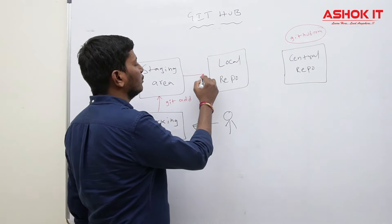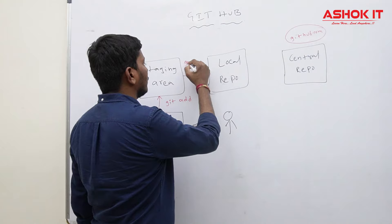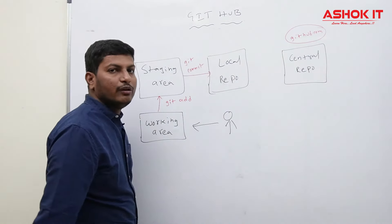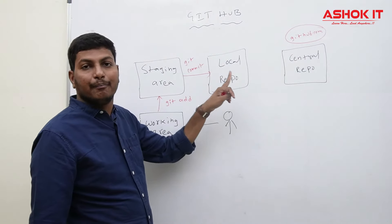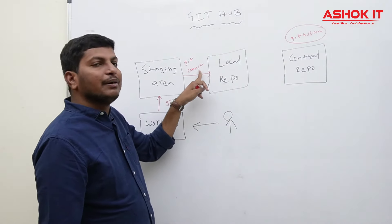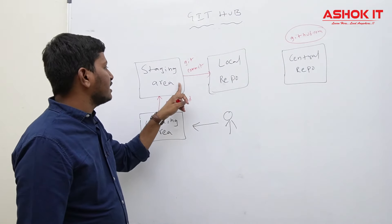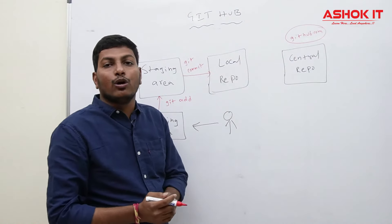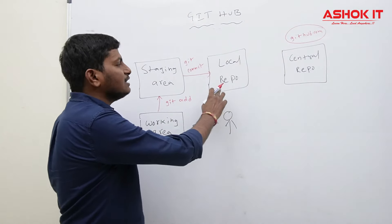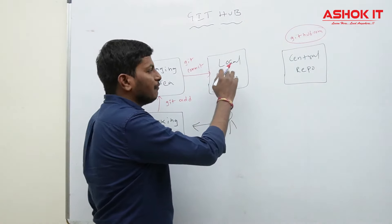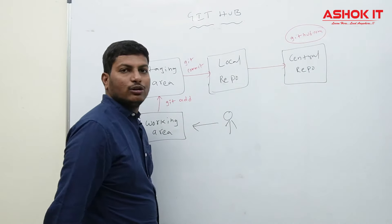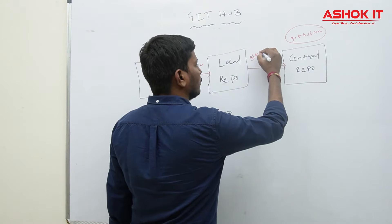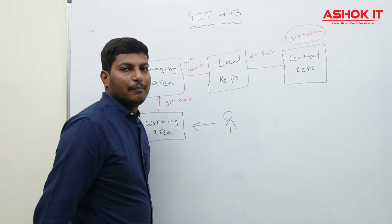By using the git add command we can add the files to the staging area. Once the file is added to the staging area, we use the git commit command. By using git commit we commit the file with a message explaining why we are committing. When we execute the git commit command, that file goes from the staging area to the local repository — Git maintains a local repository on your system.